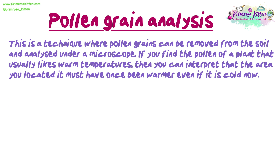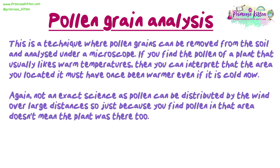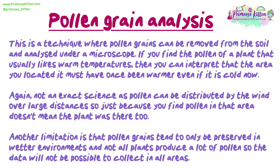Pollen grain analysis is a technique where pollen grains can be removed from the soil and analysed under a microscope. If you find the pollen of a plant that usually likes warm temperatures, then you can interpret that the area must have once been warmer if it is cold now. Again, not an exact science, as pollen can be distributed by the wind over large distances, so just because you find a pollen in that area doesn't mean the plant was there too. Another limitation is that pollen grains tend to only be preserved in wetter environments, and not all plants produce a lot of pollen, so the data will not be possible to collect in all areas.